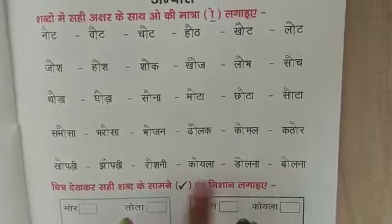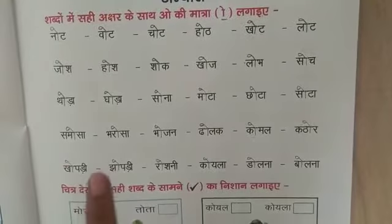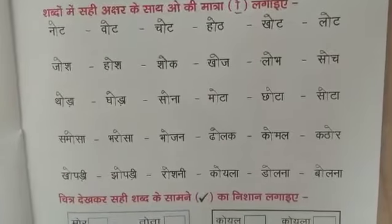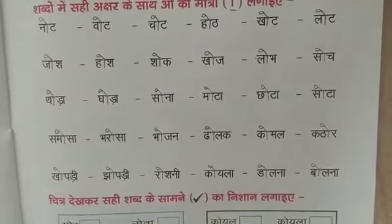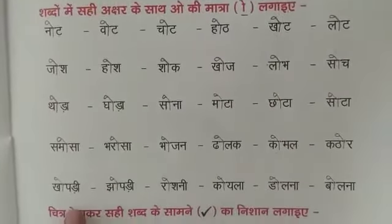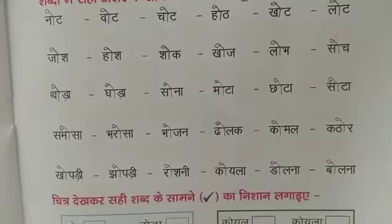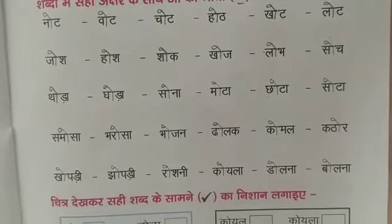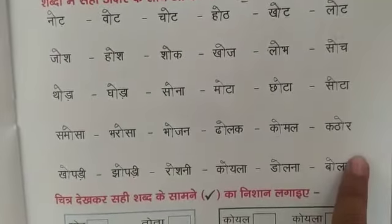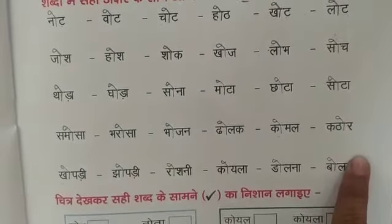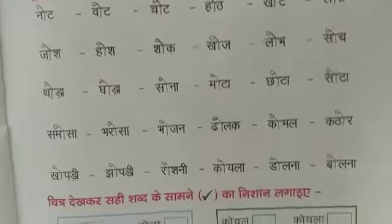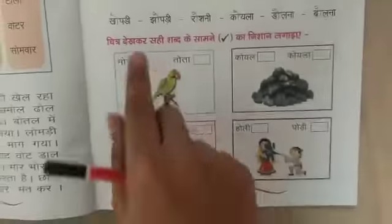आपको ऐसे ही करना है। यहाँ पे सही अक्षर के साथ आपको ओ की मात्रा को जोड़ना है और सही शब्द को पढ़ना है। सही है? ओके? I hope you all have understood this exercise. Now we will be doing the next exercise.